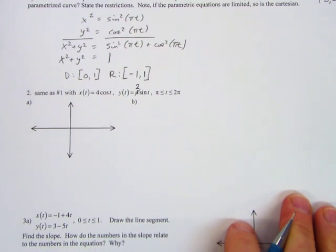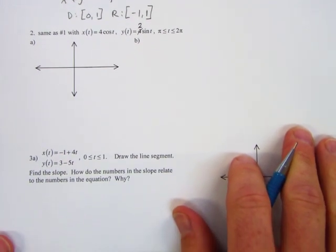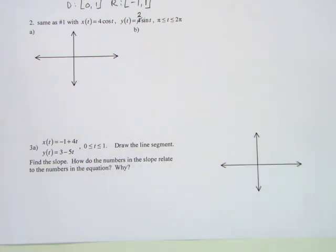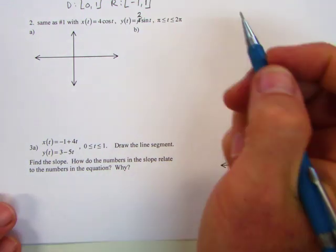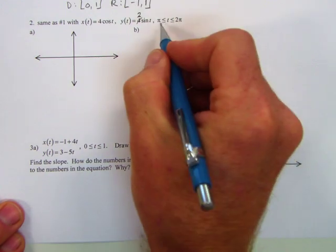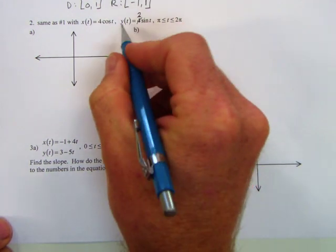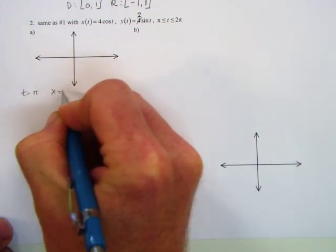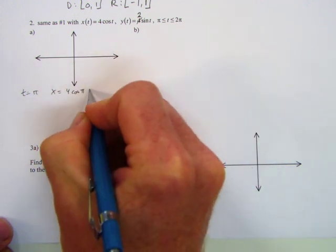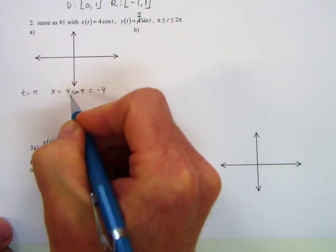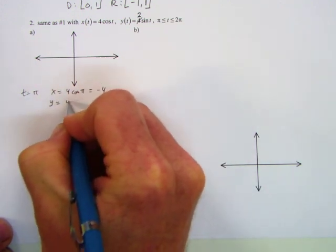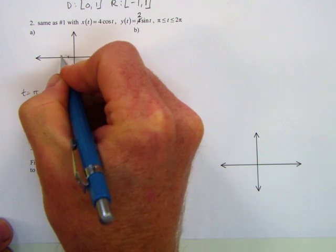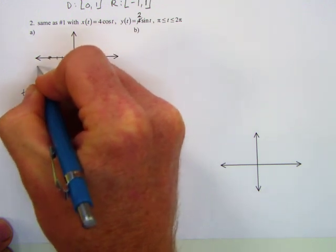Look at number 2. We're going to do the same thing, except in this one we're going to have a little bit different equation. On your paper it has 4 sine t. Change that 4 to a 2. So we have a little bit of variance on here. We can go ahead and start off and find out what our initial point is. Let's see. We're going to plug in t equals π, so we'll have x is 4 times the cosine of π. That would be 4 times negative 1, or negative 4. And y would be 2 times the sine of π, which would be 0.